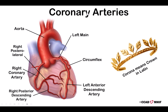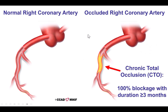Why are they called coronary arteries? Because they are encircling the heart, similar to a crown, and the Latin term for a crown is coron. Now, those arteries should be nicely open so there is no obstruction to the flow of blood to the heart muscle.